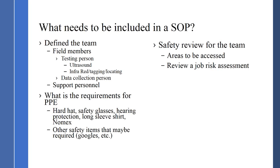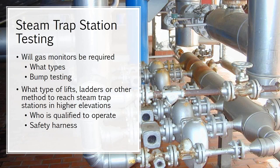For steam trap station testing, we also address other devices that might be required: gas monitoring, such as H2S monitors, and bump testing those monitors. We cover types of lifts, ladders, and other methods to reach steam trap stations at higher elevations. The SOP specifies who is qualified to operate lift ladders, what type of safety harness is required, and whether the plant will provide the safety harness — all part of getting prepped for the steam trap assessment. Equipment needs include flashlights, which must be intrinsically safe since many locations require it. The SOP addresses which ultrasonic unit is being used — a UE 9000, 10,000, or 15,000 — when it was last calibrated, and whether calibration documentation is available.